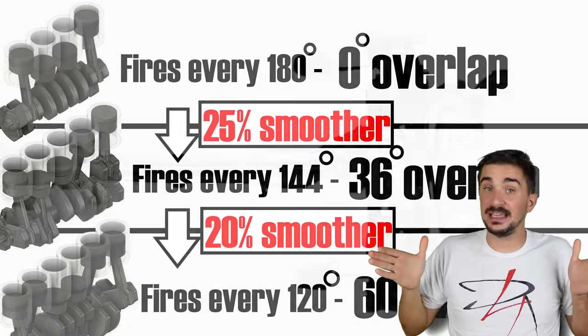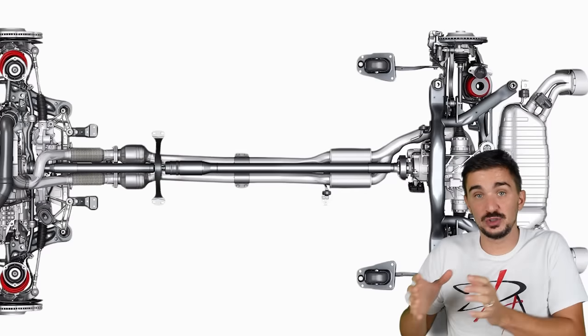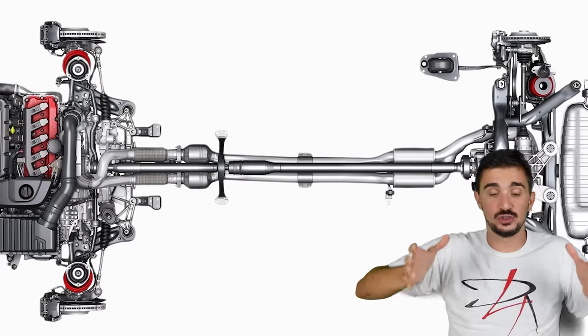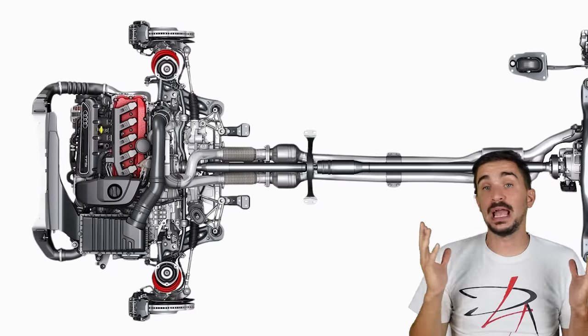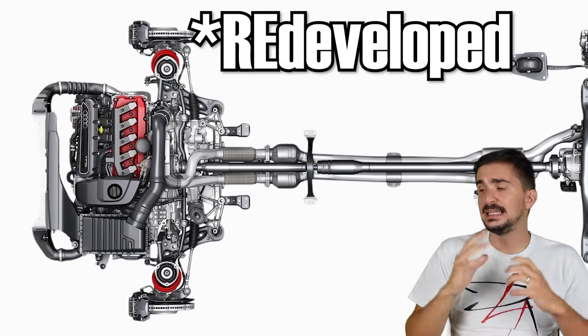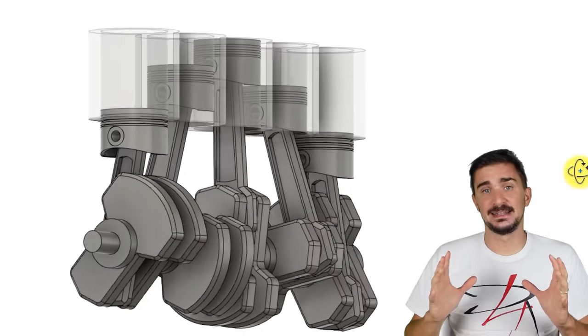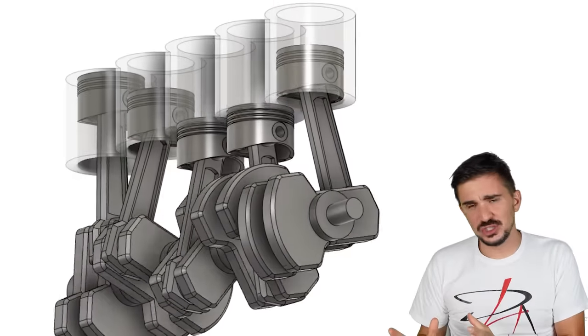Plus, the Inline 5 is shorter than the Inline 6, which makes it a lot easier to install transversely into a car, which is the primary reason why Audi developed this engine.